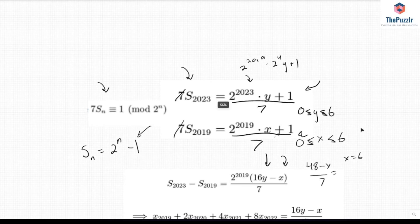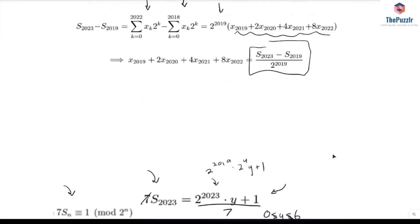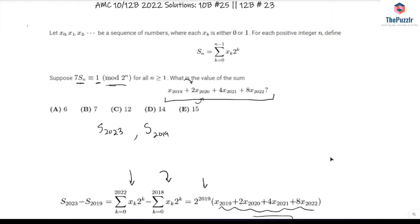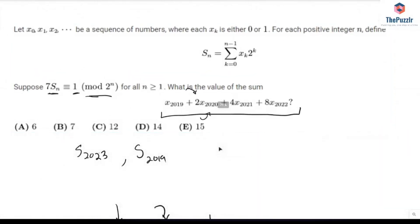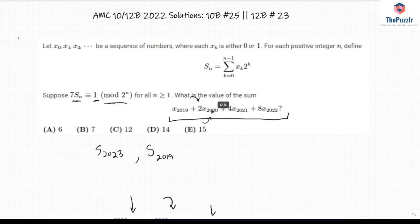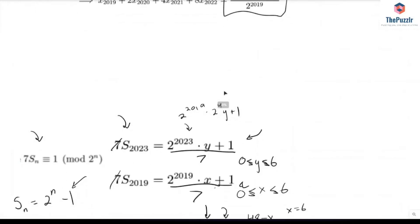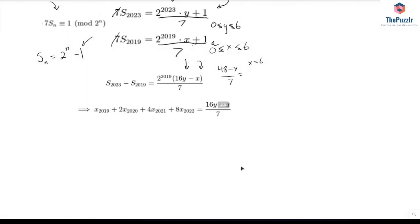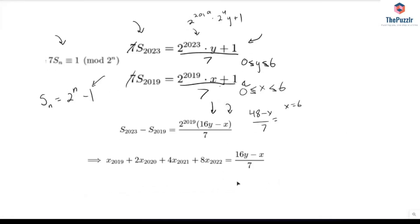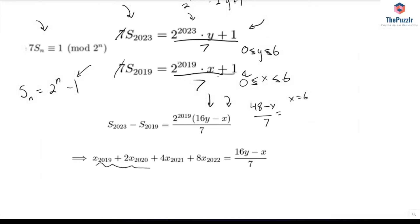So now going back into the original case, what are we asked for? We're asked for the value of x that works that would satisfy this problem's conditions, right? So if we go back, we're trying to solve this right here. So if in this case we have that y equals 3 and x equals 6, this would evaluate to 48 minus 6, so 42 over 7 equals 6. Okay, well, what if this is 4?